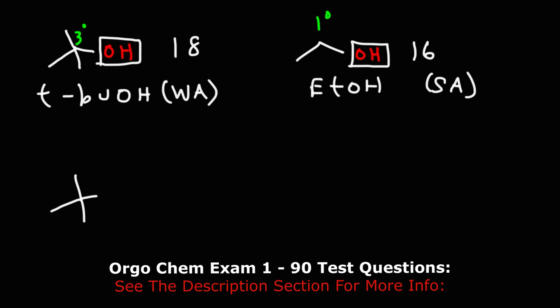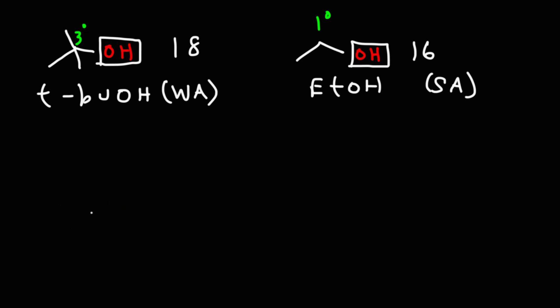So here is tert-butoxide and I'm going to draw it out. So we have a carbon with three methyl groups attached to it and here is the oxygen atom with three lone pairs and a negative charge. So that is tert-butoxide and here is ethoxide.